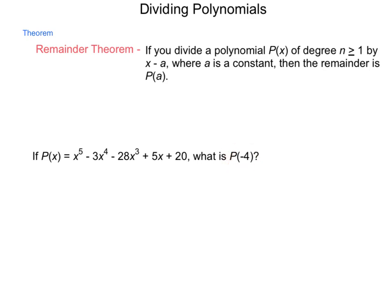I can substitute -4 in for all these x values, raise them to the appropriate powers, and evaluate. -4 to the 5th, -4 to the 4th times -3, -4 cubed times -28. It's a long process. Or, we can simply set up a long division, or a synthetic division problem. Put -4 here, and then my coefficients: 1, -3, -28, 0 because there is no quadratic term, 5, and 20, and then run through my process.